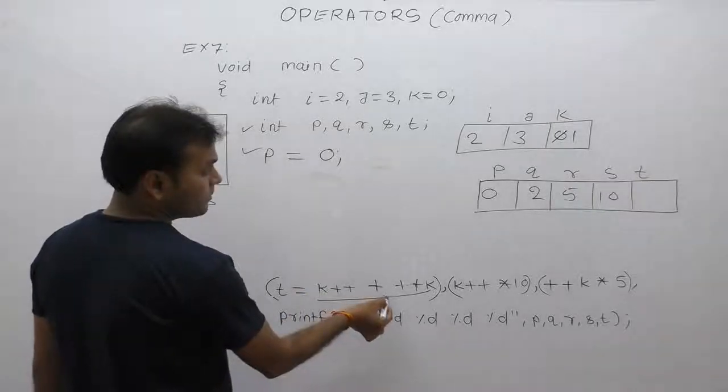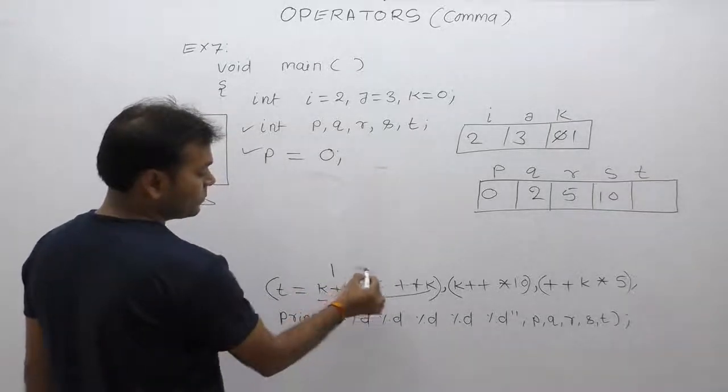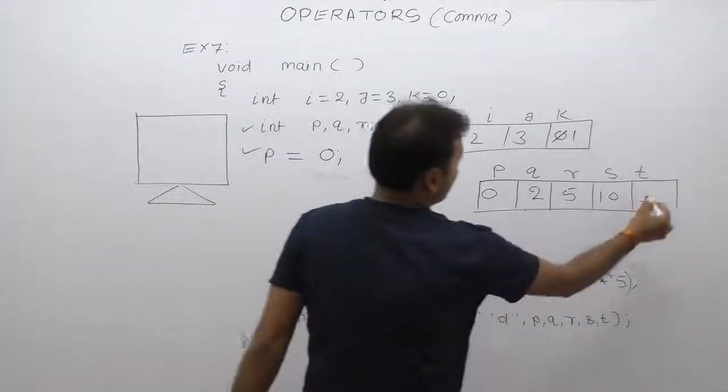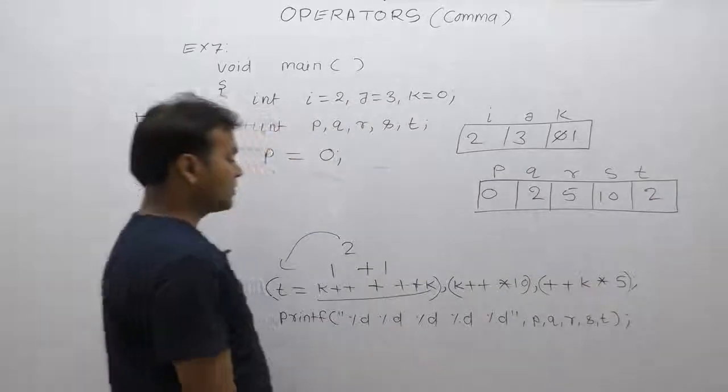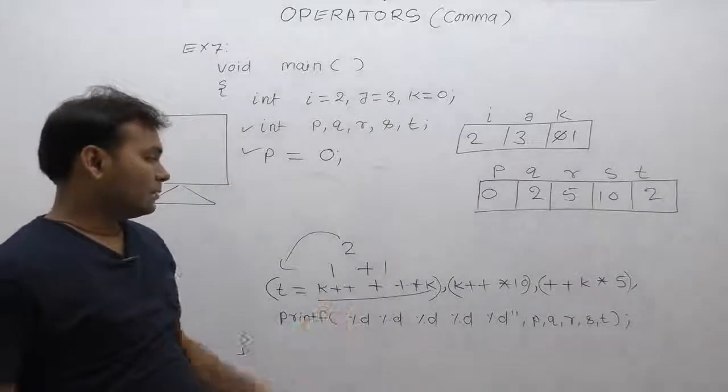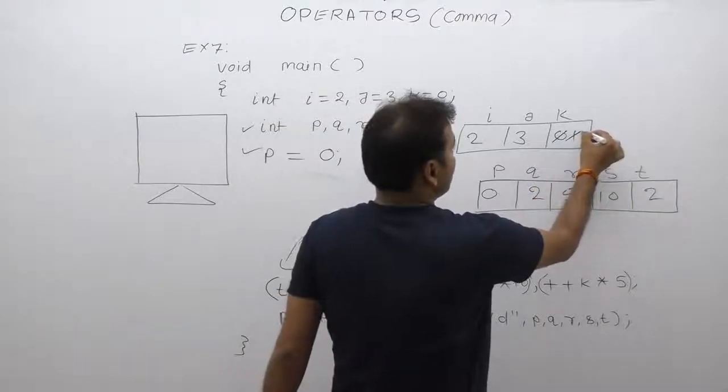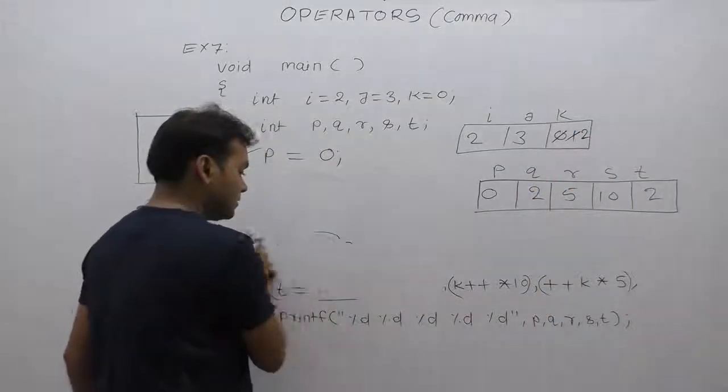k replaces current value of k which is 1, plus 1 becomes 2. 2 is assigned to the variable t, so t becomes 2. After that post increment, now k becomes, value of k. Now remove this expression.